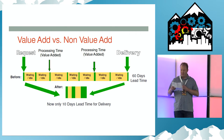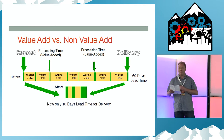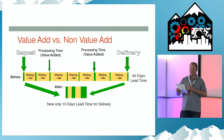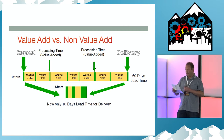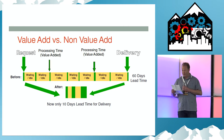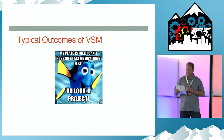Too often we focus on what we are doing and how to improve that, but the biggest opportunity is really what aren't we working on? What valuable things are sitting in a queue waiting to be worked upon? Reducing queues is by far our biggest opportunity to increase our velocity.